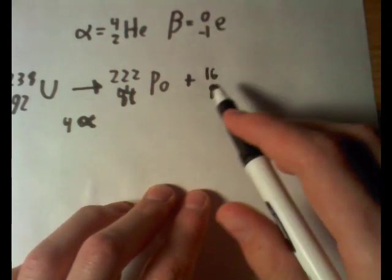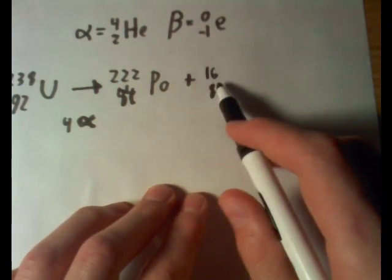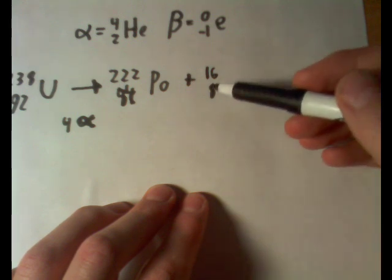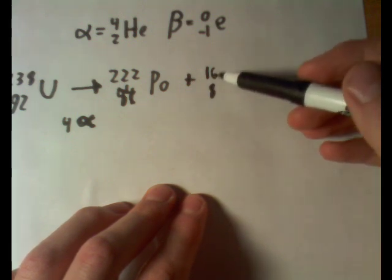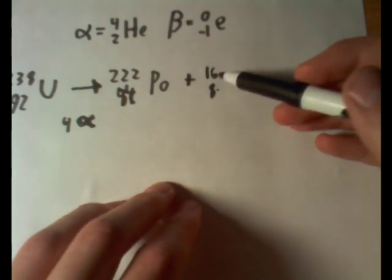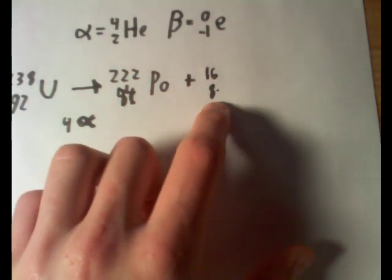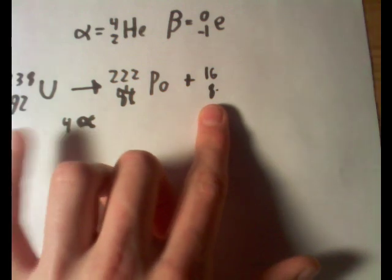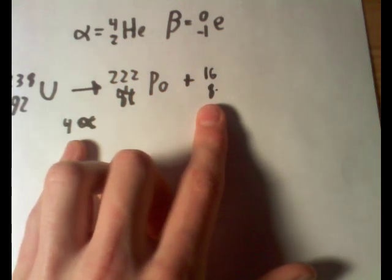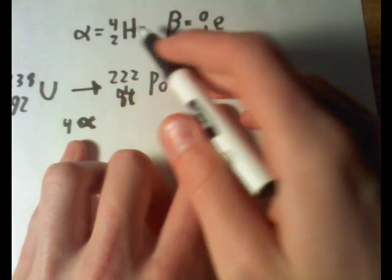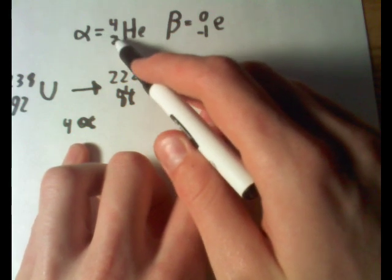So, we know whatever this has, has to be 8 charge and 16 mass. And if we look in the periodic table, 8 I believe is oxygen, but it says we undergo 4 alpha decays. And 4 alpha decays is this particle here, this helium.